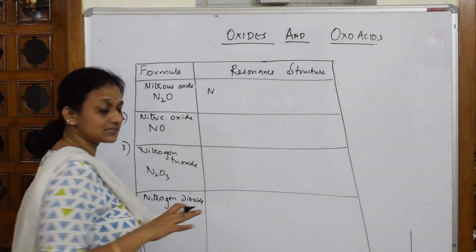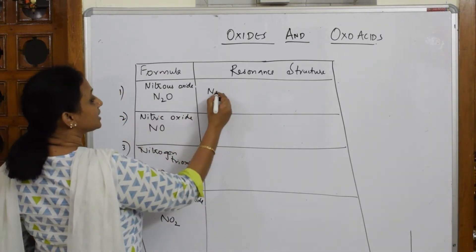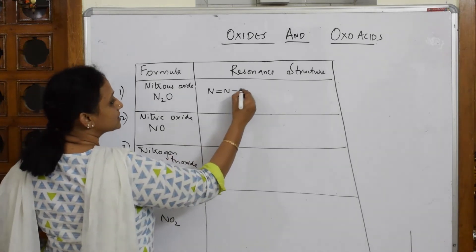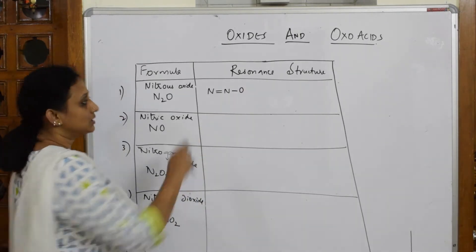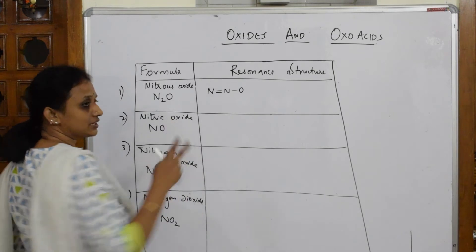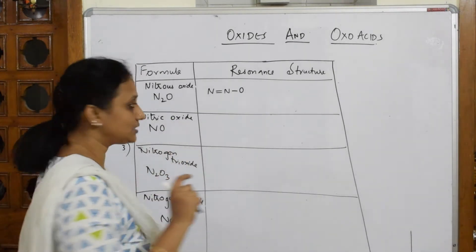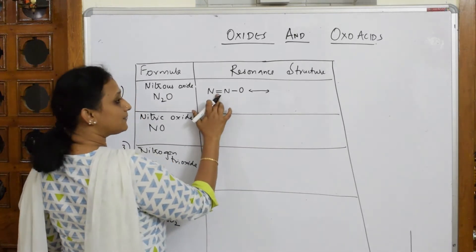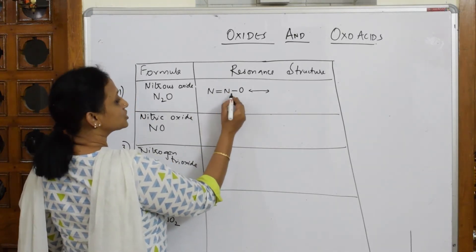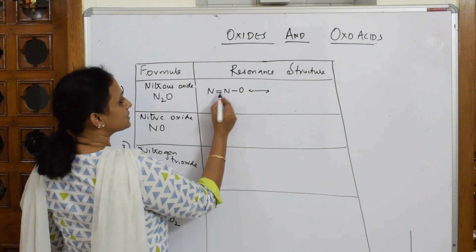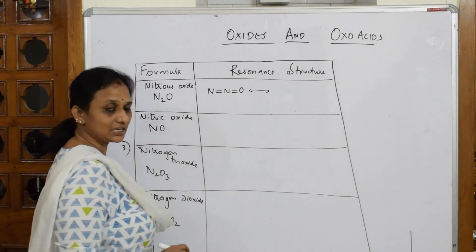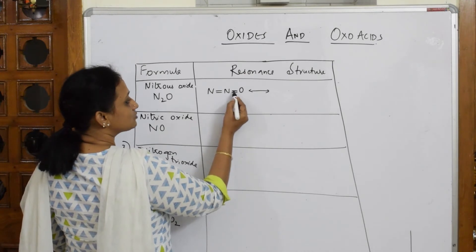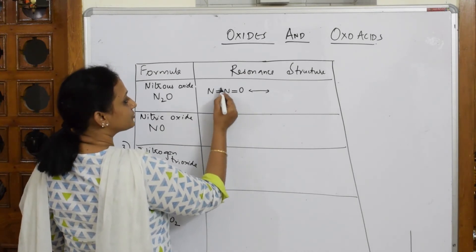For N₂O, start with N double bond N, then single bond O, because around nitrogen the octet should be filled. This structure shows a resonance — draw a double-sided arrow. Notice both bonds are double here; during resonance, one bond shifts from here to here.